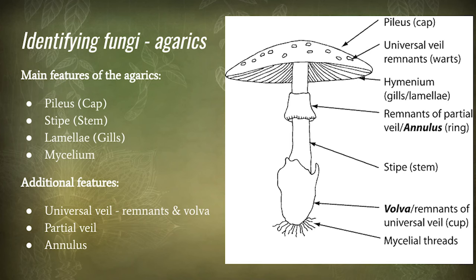The fungi we're focusing on today are the gilled fungi. The main identifying features of agarics are your pileus — which is your cap — your stipe, which is your stem, lamellae, which are your gills, and then also the mycelium. Additional features you might look at are the universal veil, which is often present as remnants on the cap. Amanita muscaria is a great example — it has those warts on top of the cap. Also a volva — Amanita phalloides, the death cap, has this distinctive cup at the base of the stem.